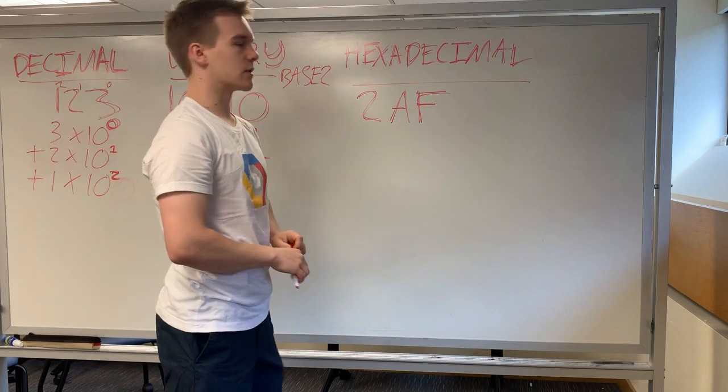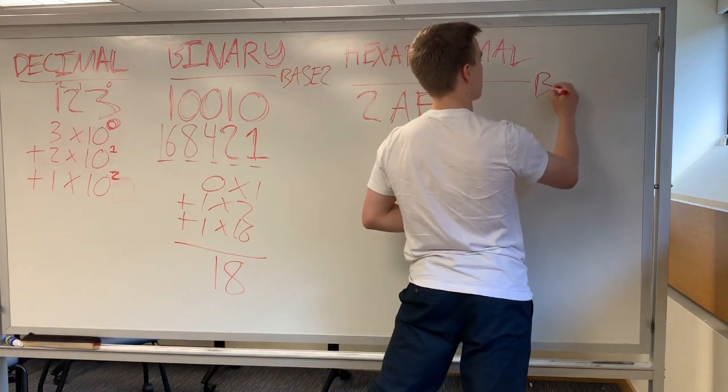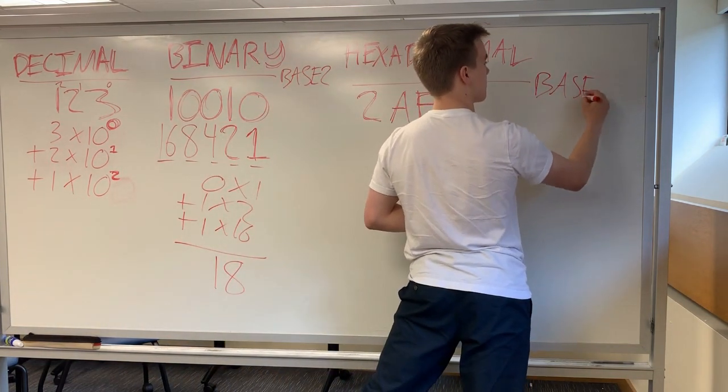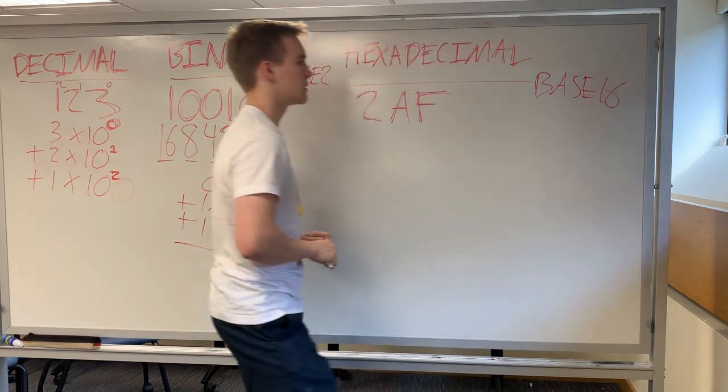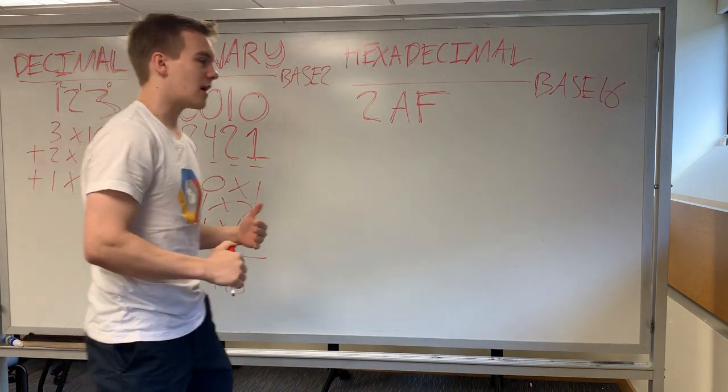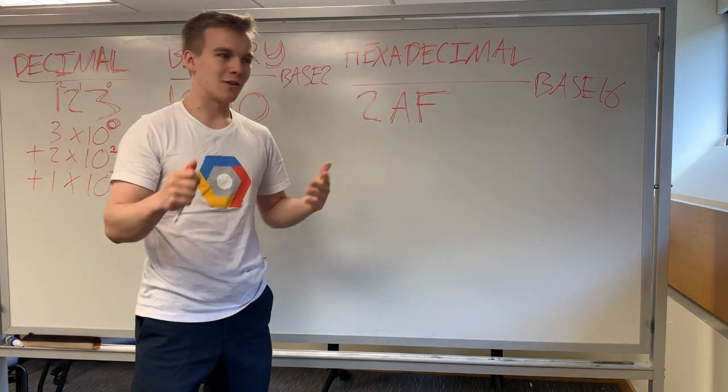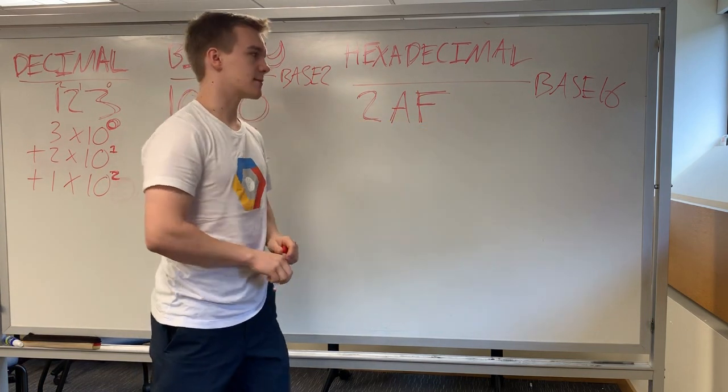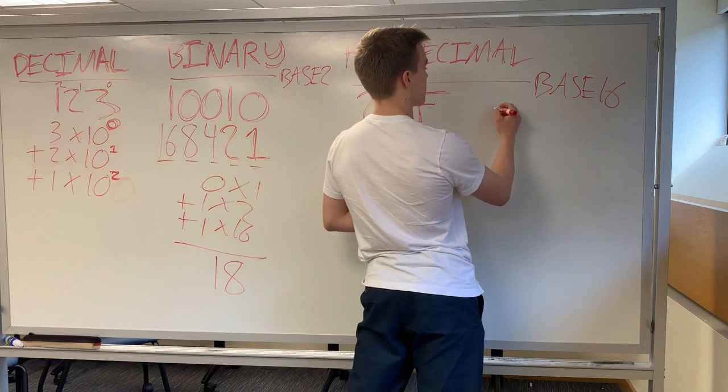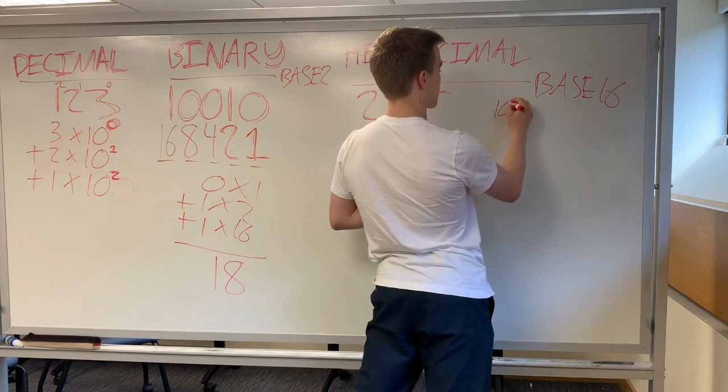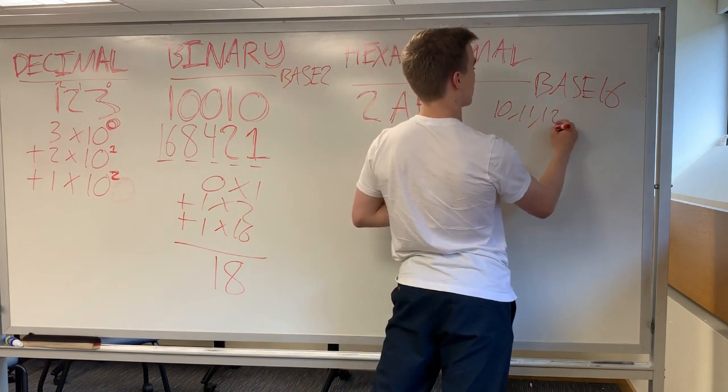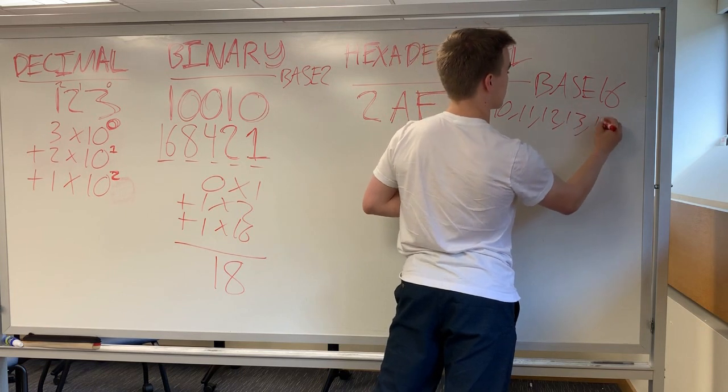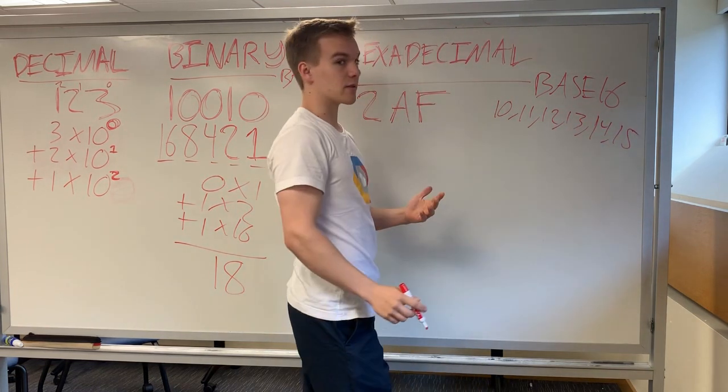Hexadecimal, on the other hand, is base 16. So the challenge here is that we don't have 16 digits in our vocabulary to represent the 16 digits in hexadecimal. So for the number 10, 11, 12, 13, 14, and 15, we map them onto letters.